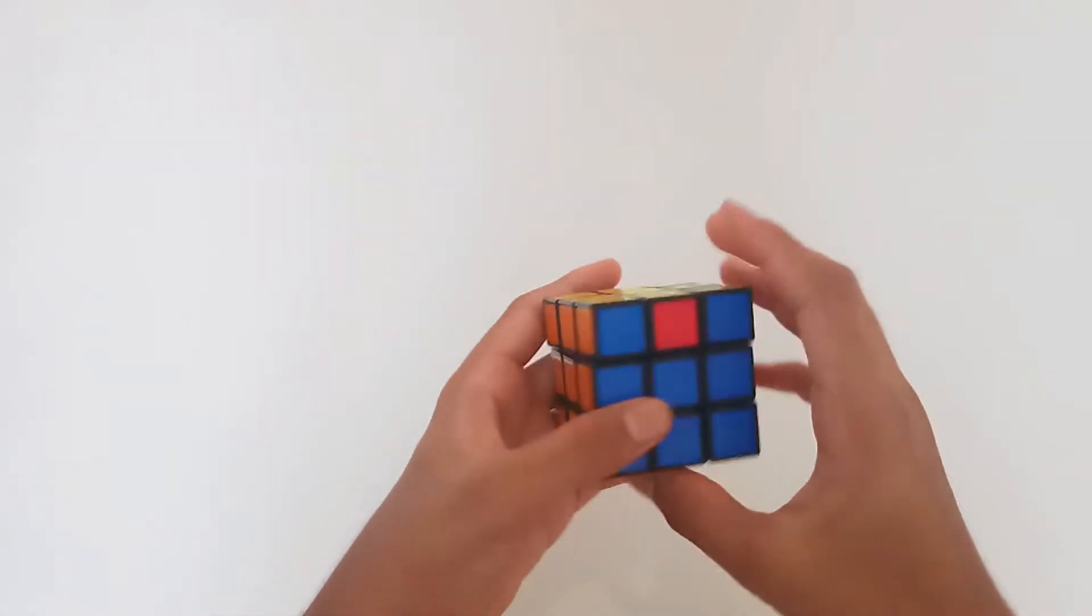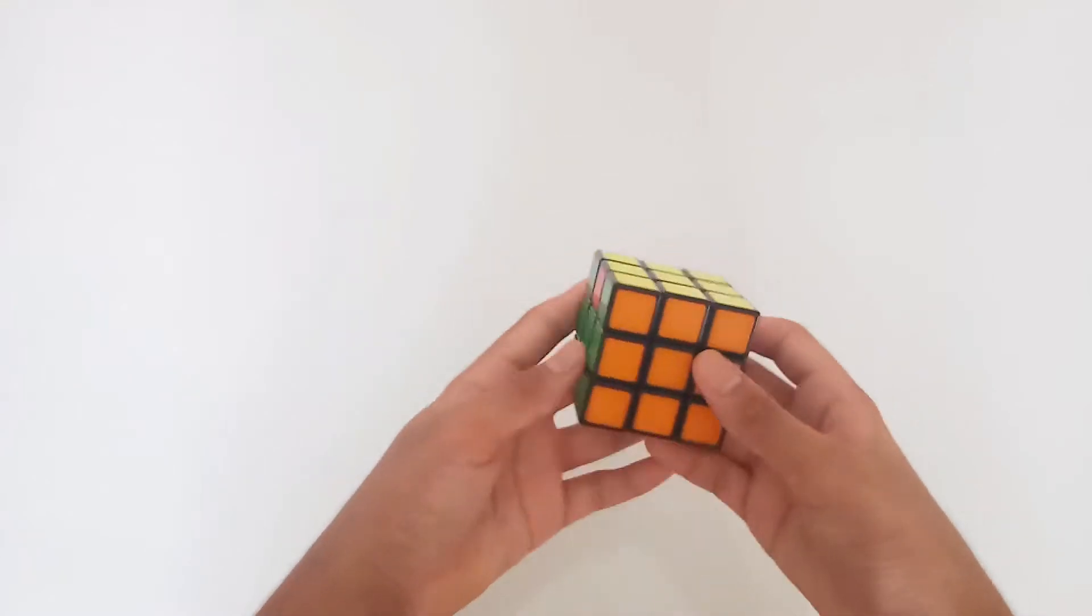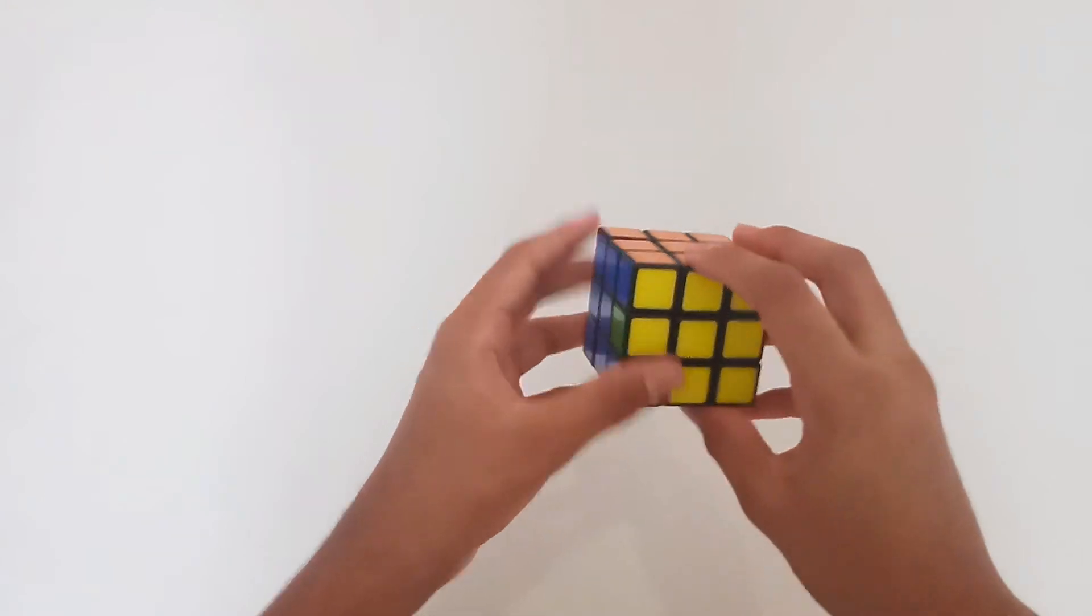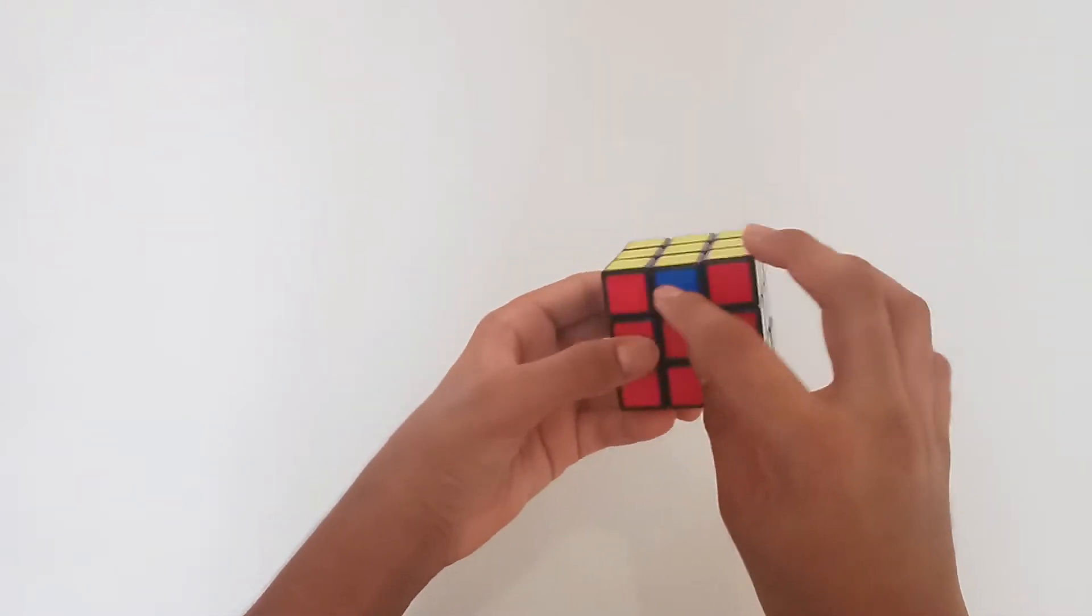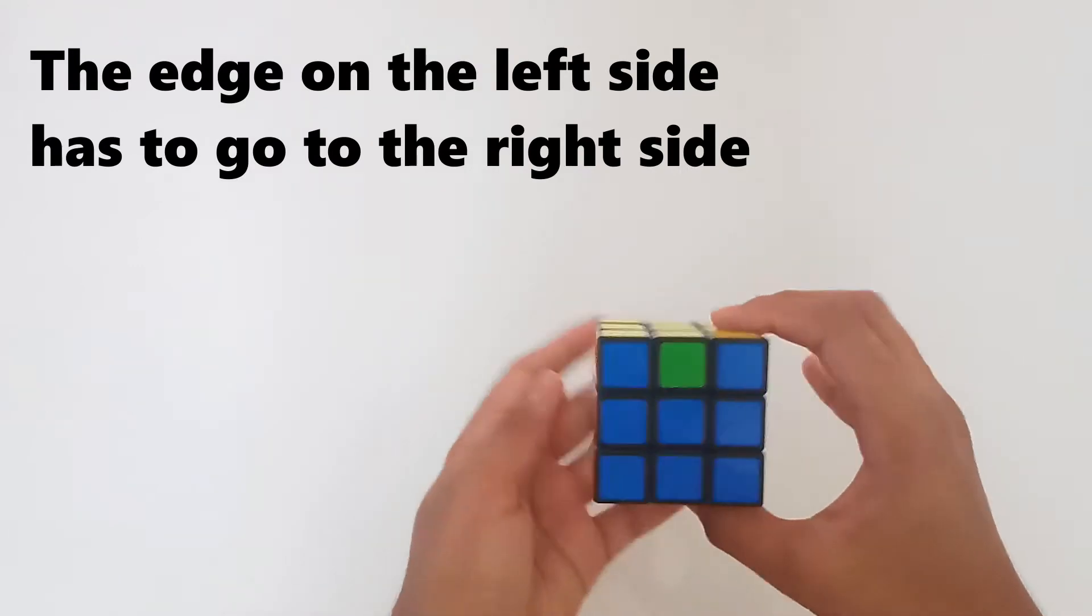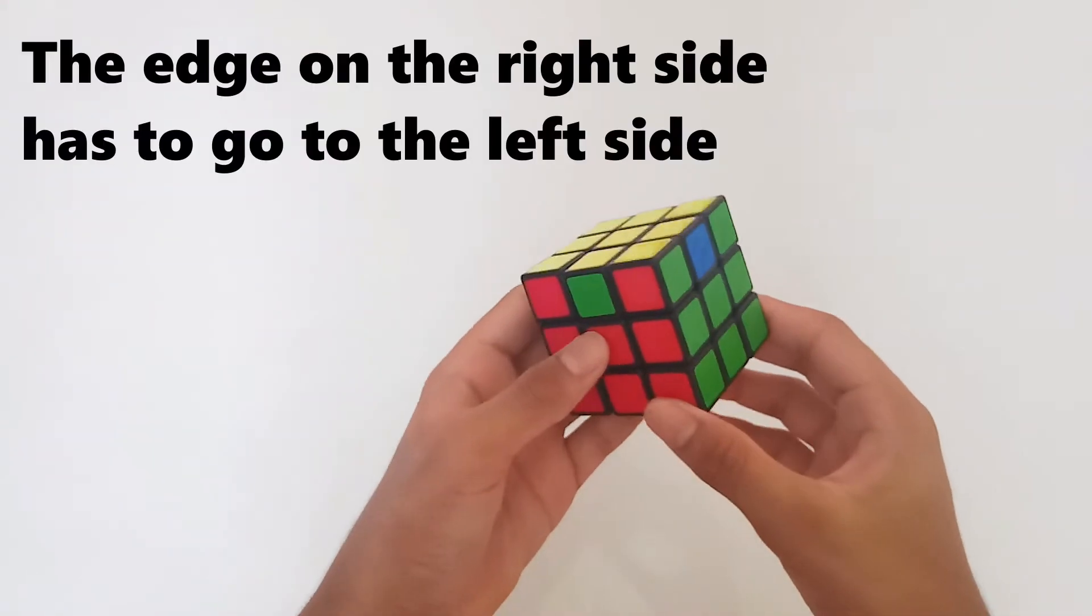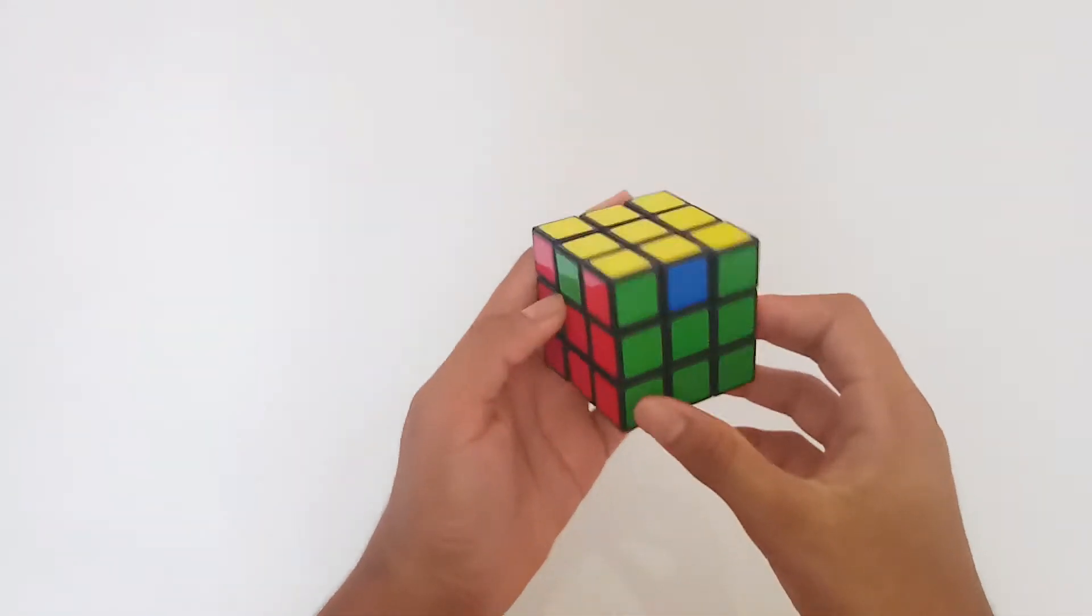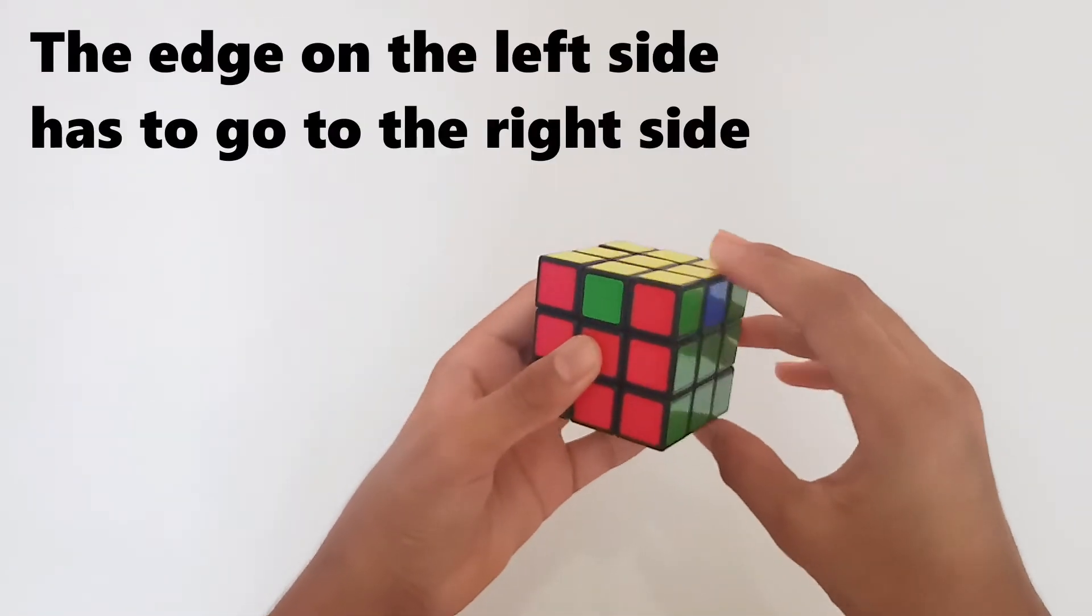After you solve all the corners, the case you get most often is a case like this where this corner is solved and these three have to be switched around. When you get this case, you can solve it like this.